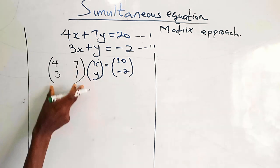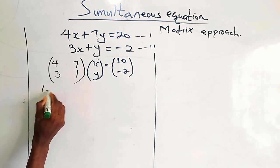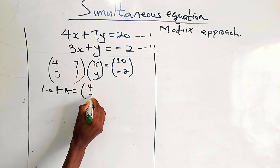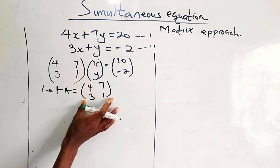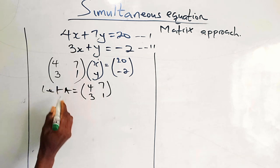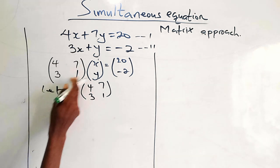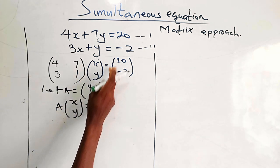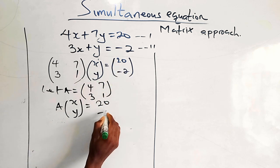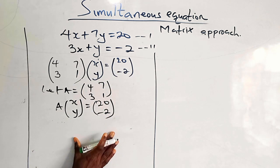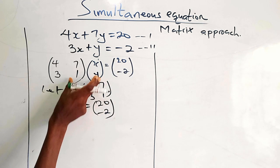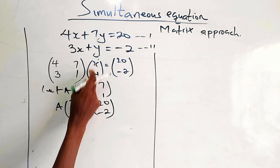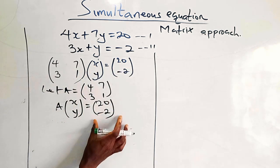This is matrix A. Let A represent this — so we have 4, 3, 7 and 1. We can write this as A times x, y equals 20 and minus 2. It's like you write this by changing the coefficient matrix to A, which gives A times [x, y] equals [20, minus 2].